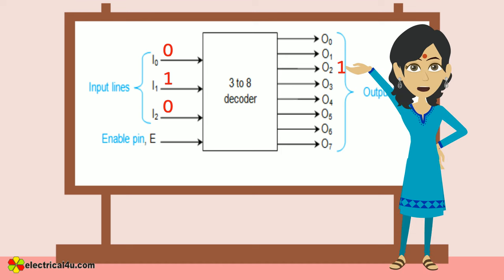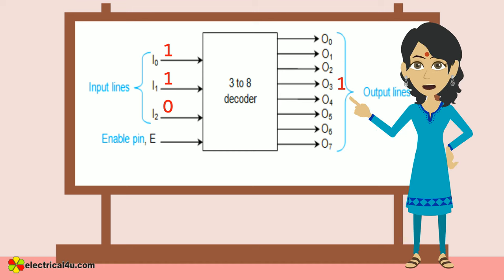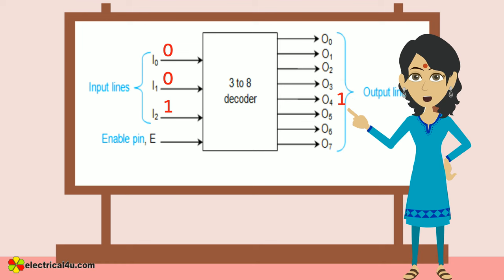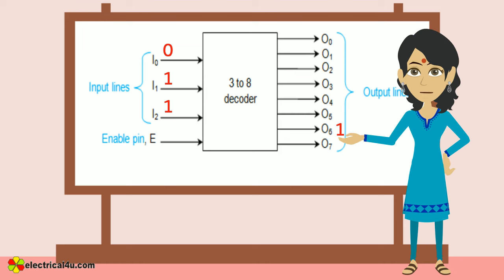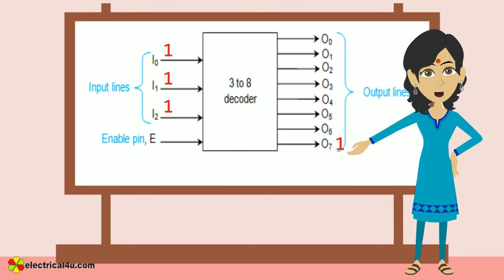That is, O2 is high for 010, O3 is high for 011, O4 is high for 100, O5 is high for 101, O6 is high for 110, and O7 is high for 111.